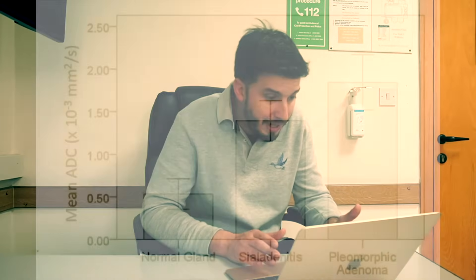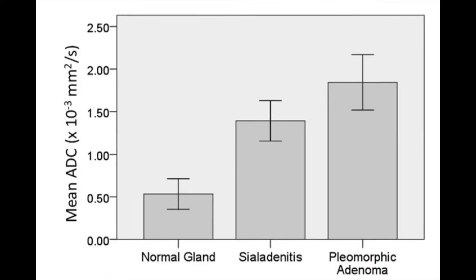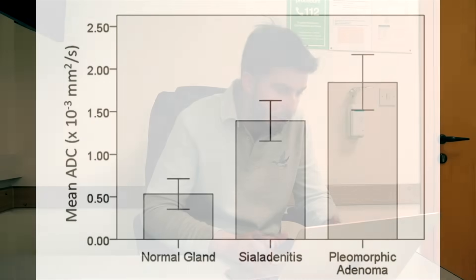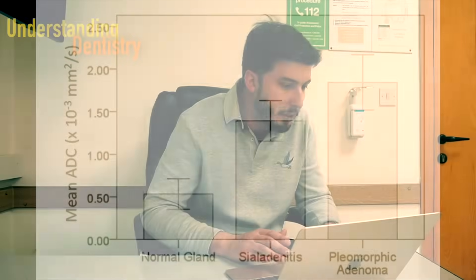The second graph covers the comparison when pleomorphic adenoma is included — that's why it uses the ANOVA test, as it's the only comparison including all three conditions. The p-value is significant, confirming that the ADC value differentiates pleomorphic adenoma from the other groups.